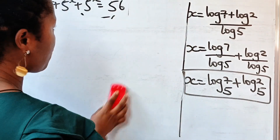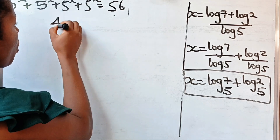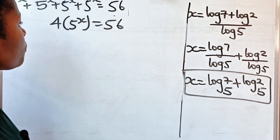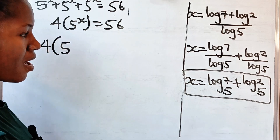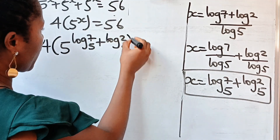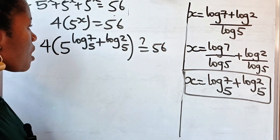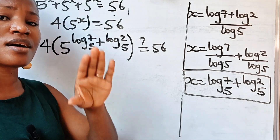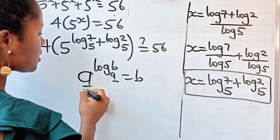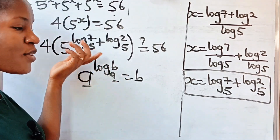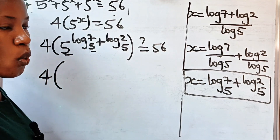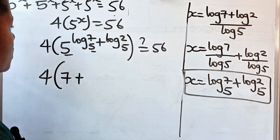Remember that we simplified this as 4 multiplied by 5 to the power of x is equal to 56. So this is what I'm going to use to prove the answer is right. We have 4 multiplied by 5 to the power of x, where x is log 7 base 5 plus log 2 base 5. Is this actually equal to 56? Remember a very important law: a to the power of log b base a is equal to b. As long as the bases are the same, the answer is b. So let's relate it to what we have on the board. We have 4 multiplied by — you see that this and this are equal — so the whole of this is 7.